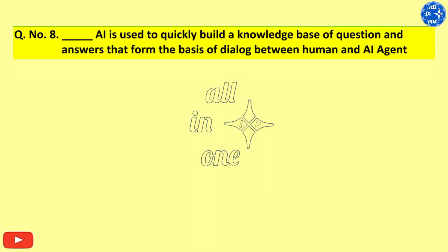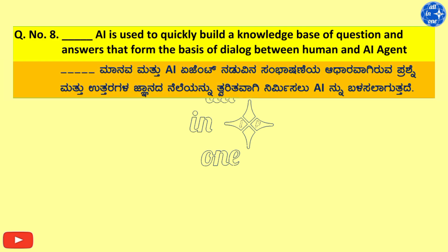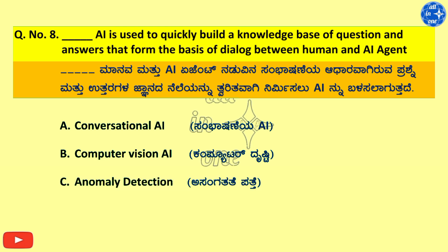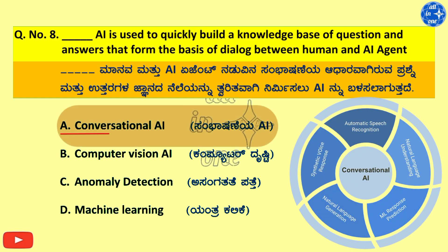Q8. Dash AI is used to quickly build a knowledge base of questions and answers that form the basis of dialogue between human and AI agent. Options: A. Conversational AI, B. Computer Vision AI, C. Anomaly Detection, D. Machine Learning. Right answer is A. Conversational AI.